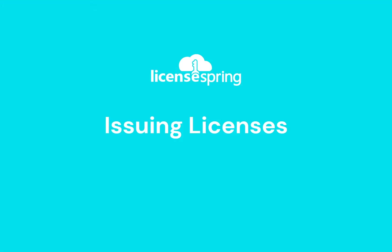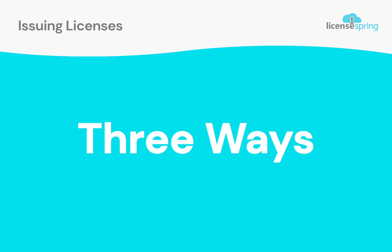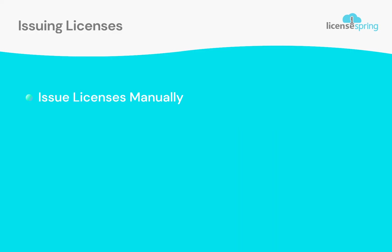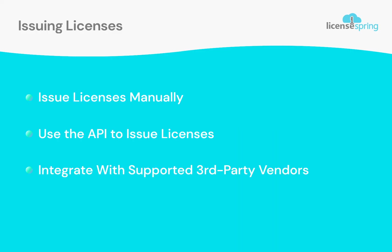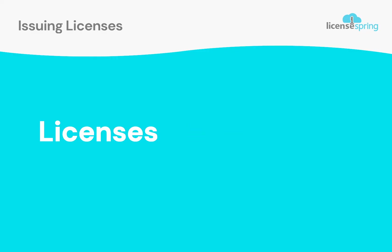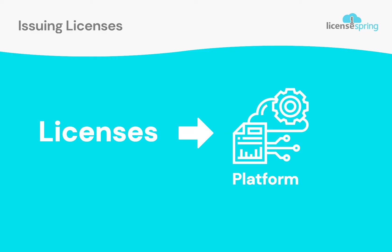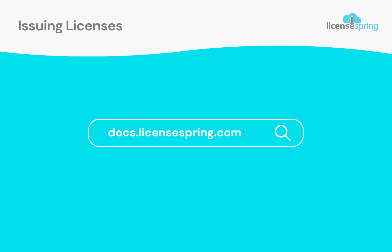Now let's see how you can issue licenses. There are three ways to do this: you can issue them manually through the platform, use our license API, or integrate LicenseSpring with one of our supported third-party payments and e-commerce vendors. I will demonstrate the process of issuing licenses through the platform, but the same capability can be achieved by using our API or through our integrations. Please visit our documentation or submit a support request for more information on issuing licenses programmatically.